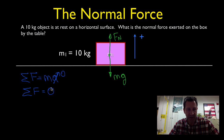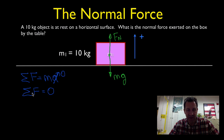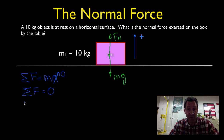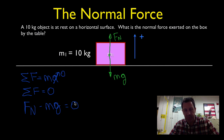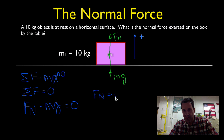The net force acting on the box — the sum of all the forces — has to be equal to zero because the box is at rest, meaning it's not changing its velocity, meaning it's not accelerating. So let's sum up the forces: FN minus mg equals zero, where FN is up (positive) and mg is down (negative). Solving for the normal force, we get FN equals mg.